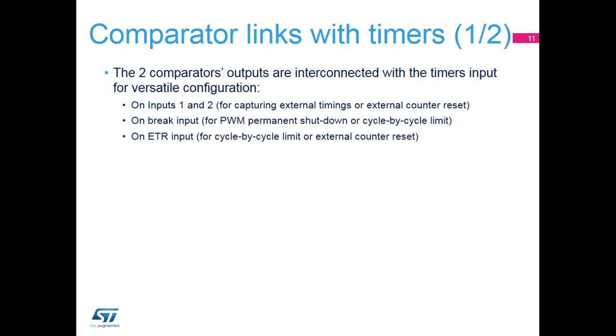The comparators have internal connections with the timer unit. The output can be internally redirected to a wide range of timer inputs for the following purposes: emergency shutdown of PWM signals using BKIN and BKIN2 inputs, cycle-by-cycle current control using electronic timing relay or ETR inputs, and input capture for timing measures.